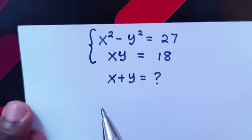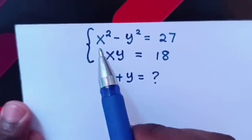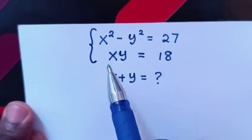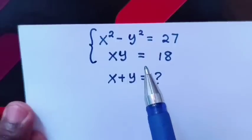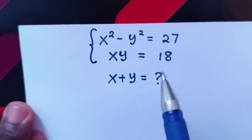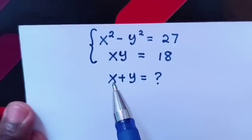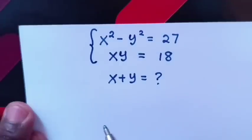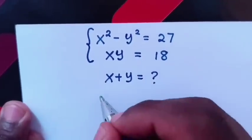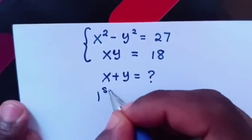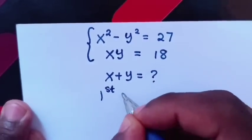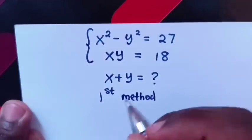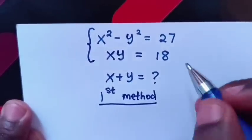Hello. How to solve the system of equations: x squared minus y squared equals 27, and xy equals 18. Find the value of x plus y. We are going to do two methods. Comment below which method is the best and easiest for you.